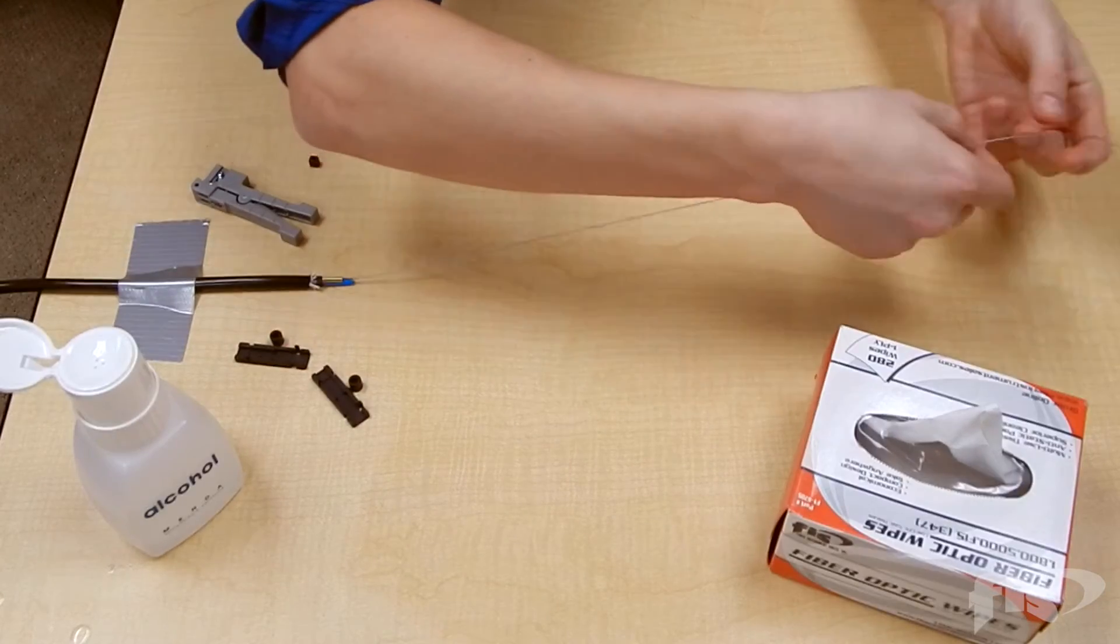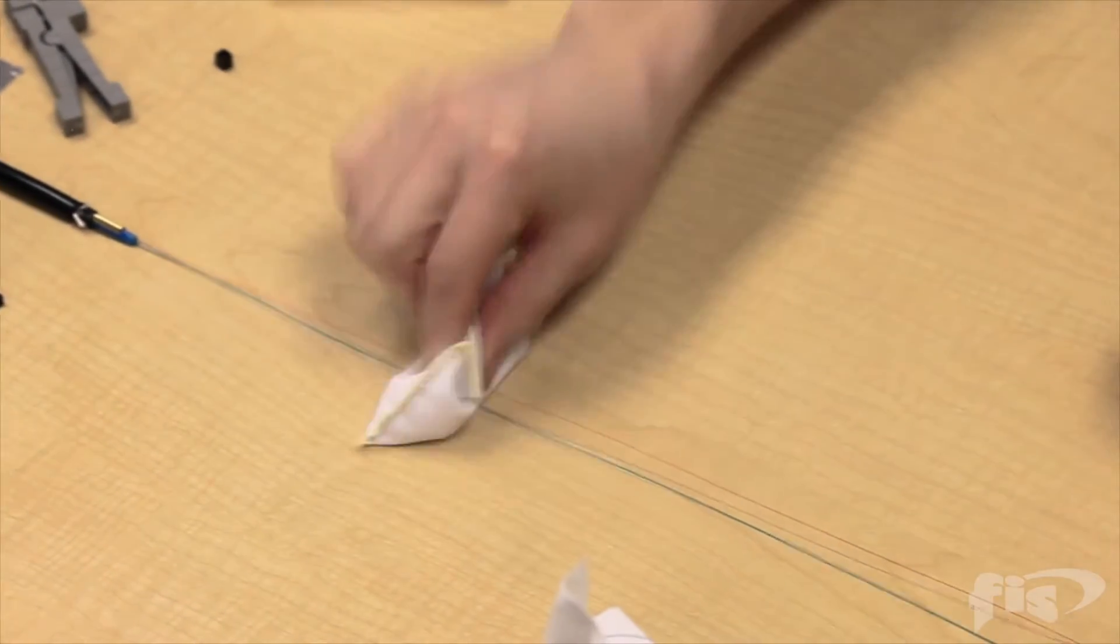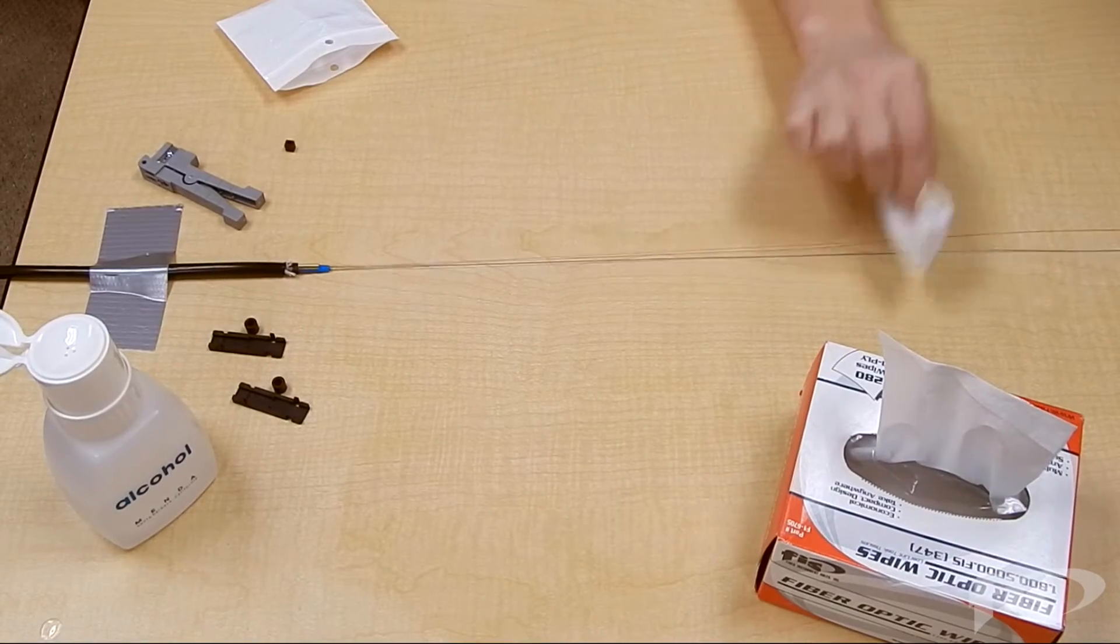Lay the fibers out and pat down with a rosin bag. This will help with fricating the fibers into the tubing of the fan out.